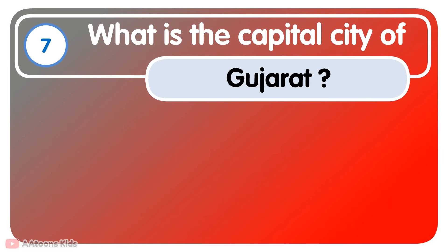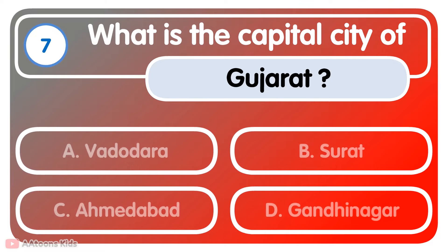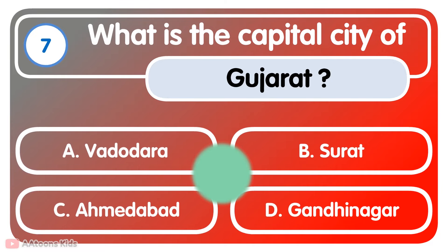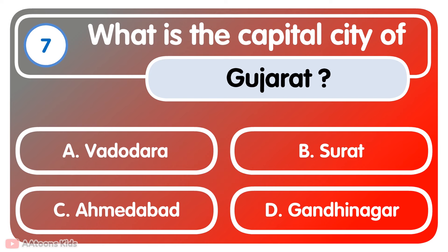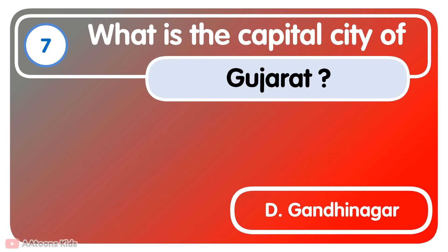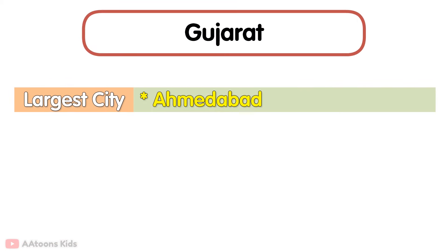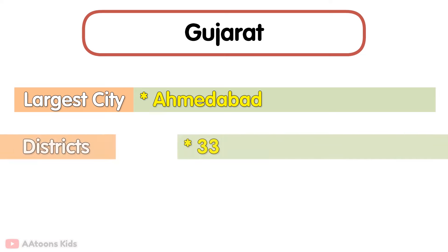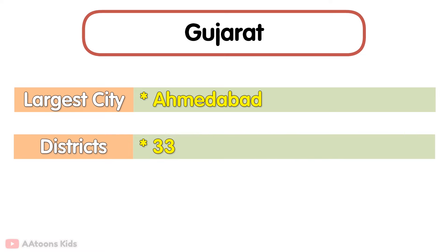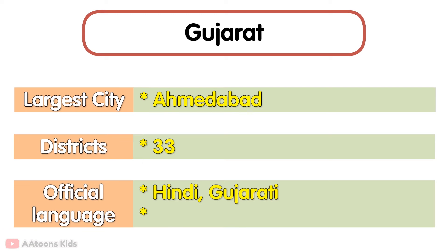What is the capital city of Gujarat? Gandhinagar is the capital city of Gujarat. The largest city is Ahmedabad. Total number of districts is 33. Official languages are Gujarati and Hindi. Gujarat is known as the Diamond City.